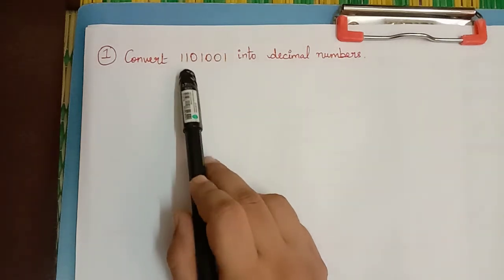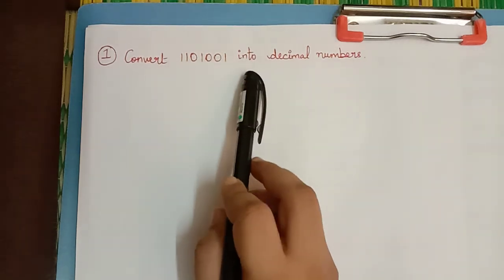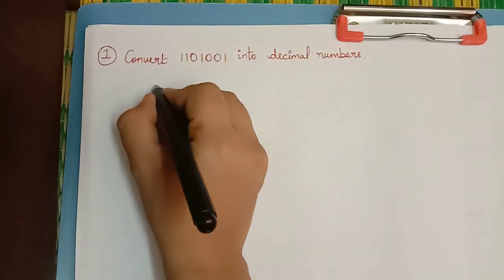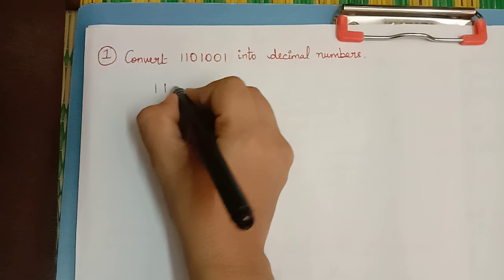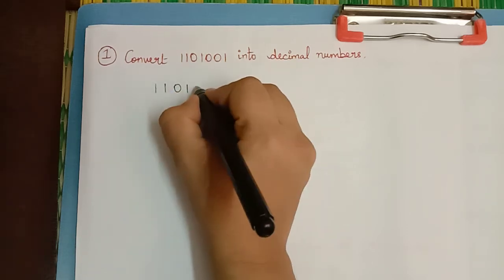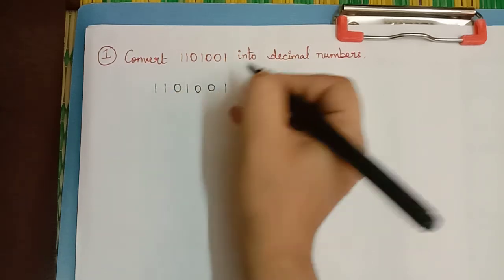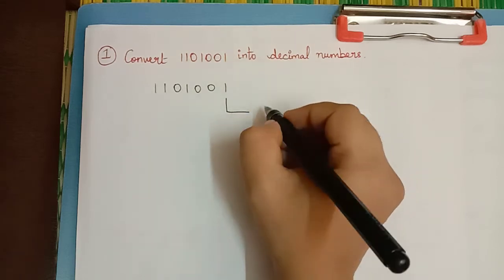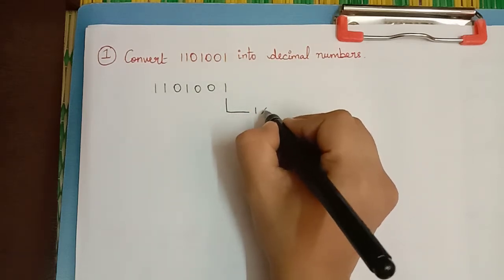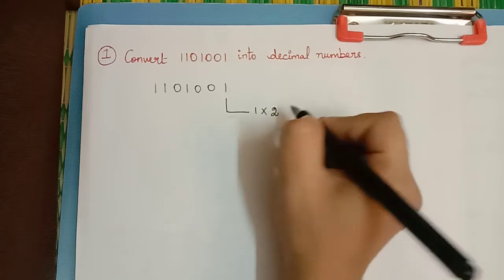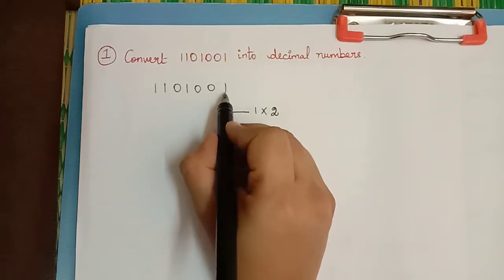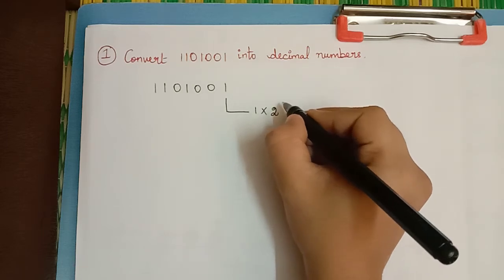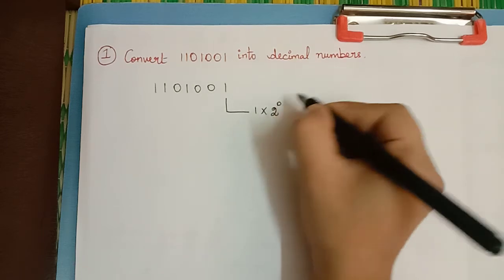Now we shall convert this binary number into a decimal number. First we have to write the given binary number. We have to multiply each digit along with 2 to the power of its position value. The position value of the rightmost digit is 0, so it will be 2 to the power 0.